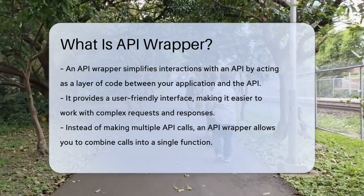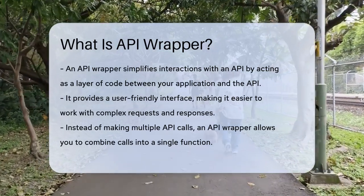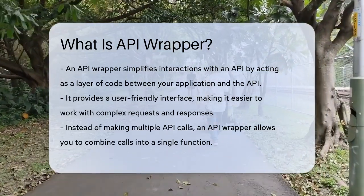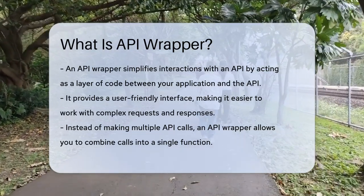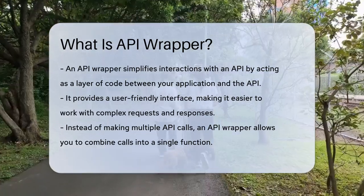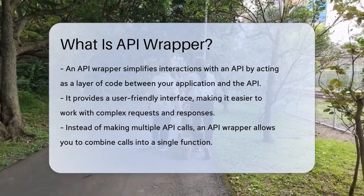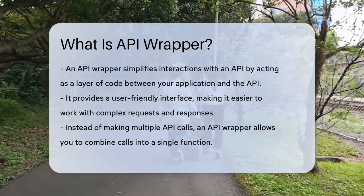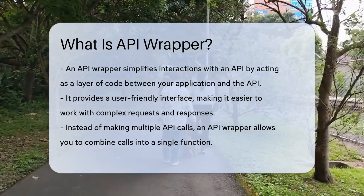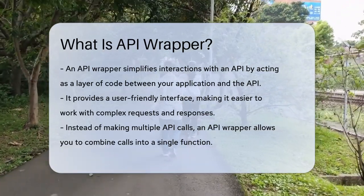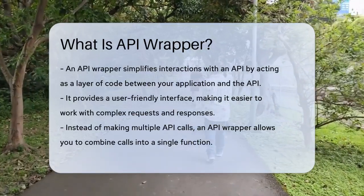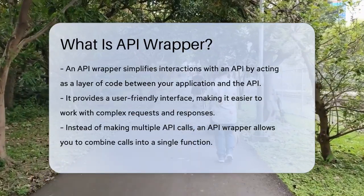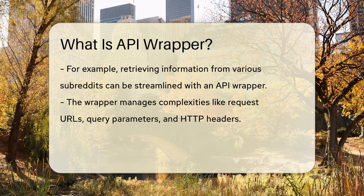An API wrapper is essentially a layer of code that acts as an intermediary between your application and an API. It simplifies the interactions with the API by providing a more user-friendly interface. Imagine having to make multiple API calls to fetch different pieces of information — with an API wrapper, you can combine these calls into a single, simpler function.